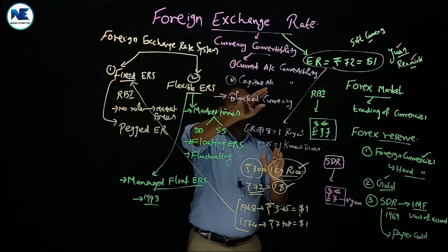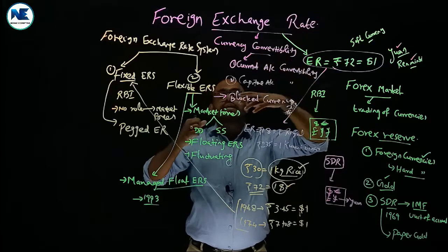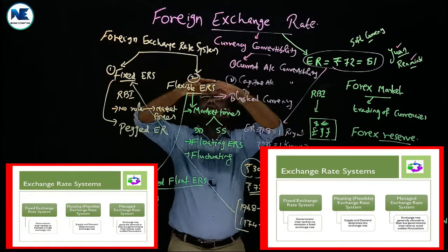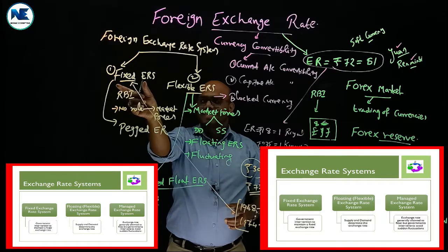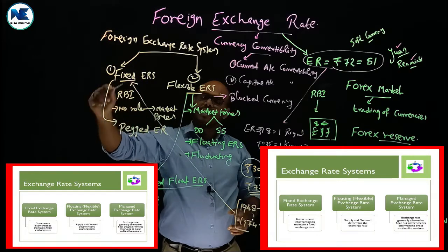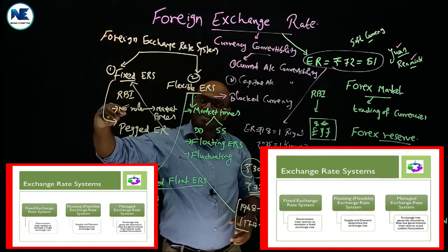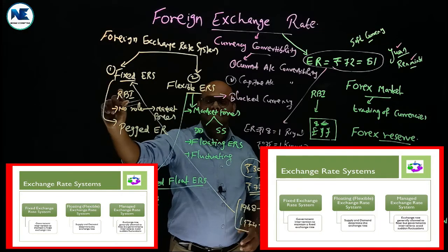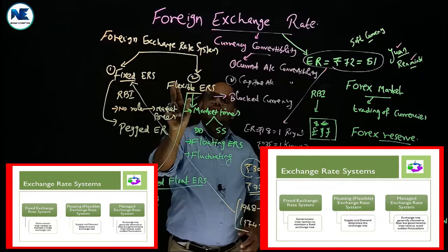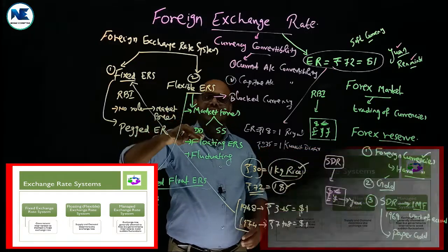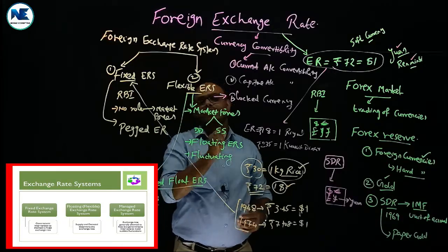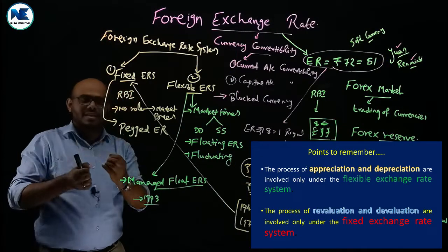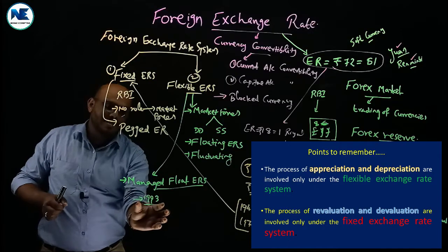Now, the foreign exchange rate system — broadly classified into two types. The fixed exchange rate system, in which the exchange rate is determined by the authority or official monetary segment like the RBI. The second is the flexible exchange rate system, where the exchange rate is determined by market forces like demand and supply of foreign currencies. And lastly, India is following the managed float exchange rate system since 1993.